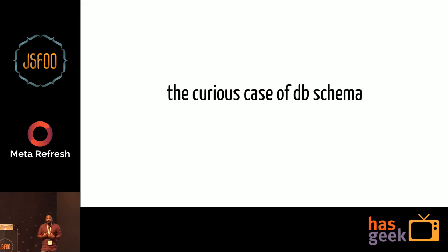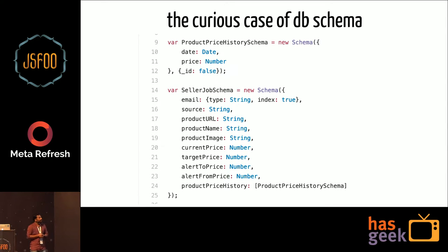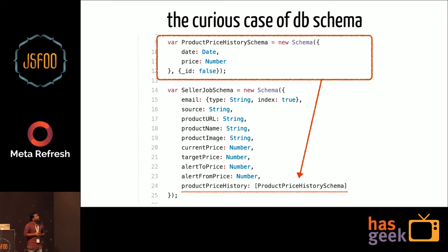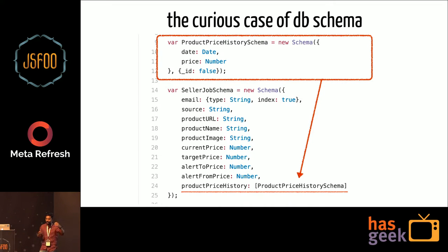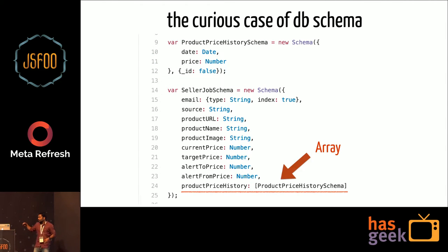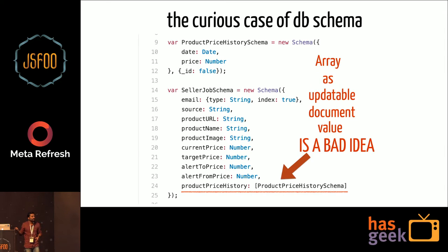The second learning is about databases. As a front-end engineer, I'd hardly ever touched databases and backends. When I was starting CheapAss, the concept of good schema design was pretty alien to me. This is what I came up with initially — I am using MongoDB, a NoSQL solution, and what I did was put one schema within another schema, available as an array inside a document. That nested schema is nothing but product price history. Every single time CheapAss checks the current price, I had to bring that array into memory, add a new item, and insert the whole document back. At scale, I figured that arrays as updatable document values turn out to be a pretty bad idea.